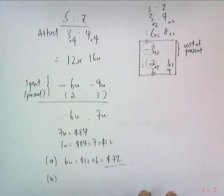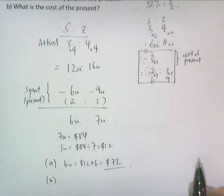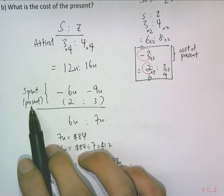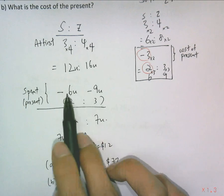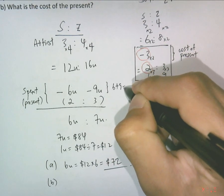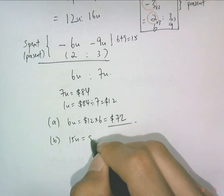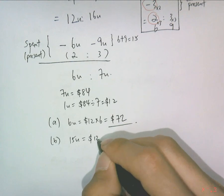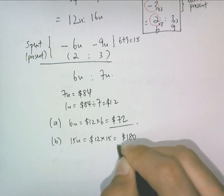Part b, what is the cost of the present? Cost of present again, looking at present, not 2 to 3, 6 to 9. So the total number of units will be 6 plus 9, which is 15 units. Finding 15 units, we just use 1 unit as $12 times 15. The cost of present is $180.